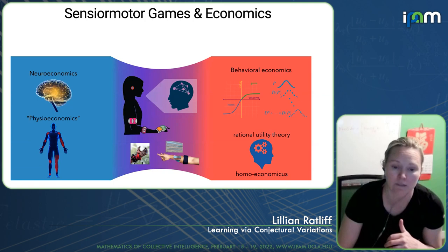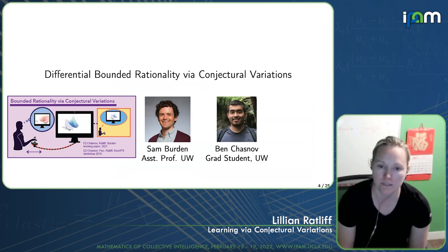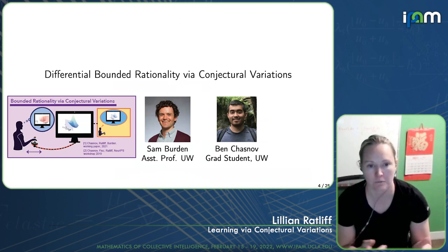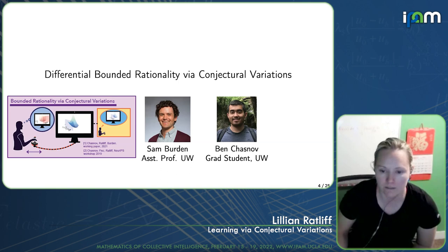This line of work is on coming up with a way to think about bounded rationality from a differential perspective — literally capturing how people make decisions using derivatives, or what's called conjectural variations. This is work with my colleague Sam Burden at UW and our joint grad student Vin Chasnov.